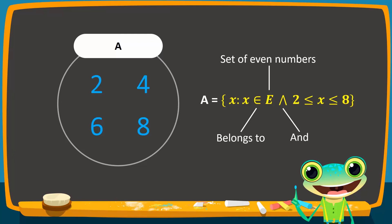When using the set builder notation, it is helpful to know about a few important sets. Here, N is the set of natural numbers. W is the set of whole numbers. Z is the set of integers. P is the set of prime numbers. E is the set of even numbers. And O is the set of odd numbers.